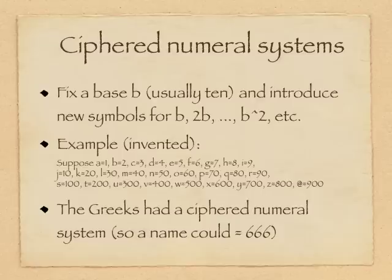And then S is a hundred, and we begin jumping by one hundred. T is two hundred, U is three hundred, up to Z is eight hundred. And I threw in the at symbol for nine hundred.